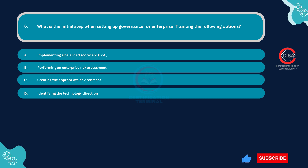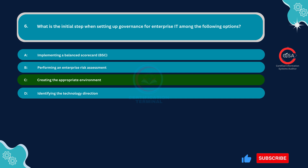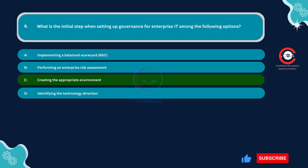Before implementing specific governance mechanisms or processes, it is essential to establish the appropriate environment that supports effective governance. This includes defining organizational culture, values, and principles that align with the objectives of governance for enterprise IT. Creating the right environment sets the tone for governance initiatives, ensures organizational support and commitment, and fosters a culture of accountability, transparency, and compliance with policies and regulations. It lays the groundwork for developing governance frameworks, structures, and processes tailored to the organization's needs, driving IT strategy, risk management, and performance improvement.